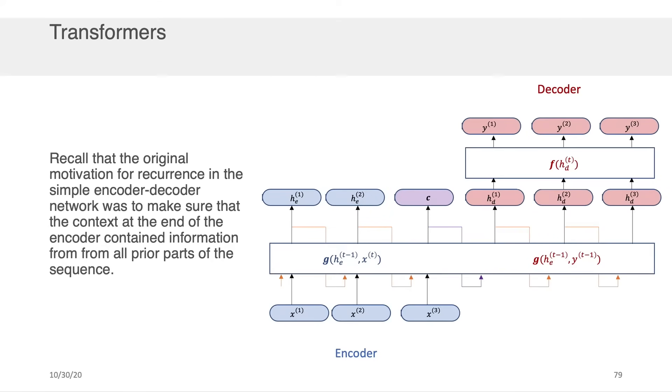Now recall that the original motivation for the recurrence in the simple encoder-decoder network that we covered earlier was to make sure that this context at the end of the encoder contained all the information from the prior parts of the sequence so that we could pass that to the decoder for whatever task we needed to solve.